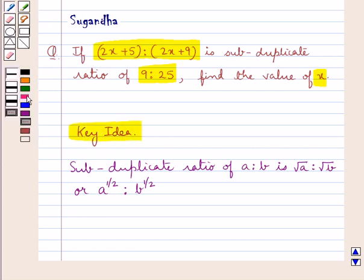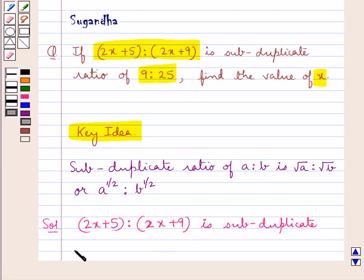Let's proceed with the solution now. We are given that the ratio (2x + 5) : (2x + 9) is the subduplicate ratio of the given ratio 9:25.